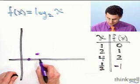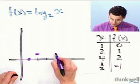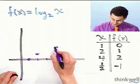4, 2. So 1, 2, 1, 2, 3, 4. And I go up 1, 2.